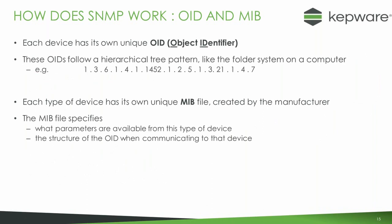The SNMP protocol has two main components. The first is the OID — Object ID — which is an object structure, similar to a folder structure on a computer. The second is the MIB file, created by the network device manufacturer, which specifies which parameters are available from that specific device model and the OID structure used to retrieve those parameters. All manufacturers have this MIB file available for download.